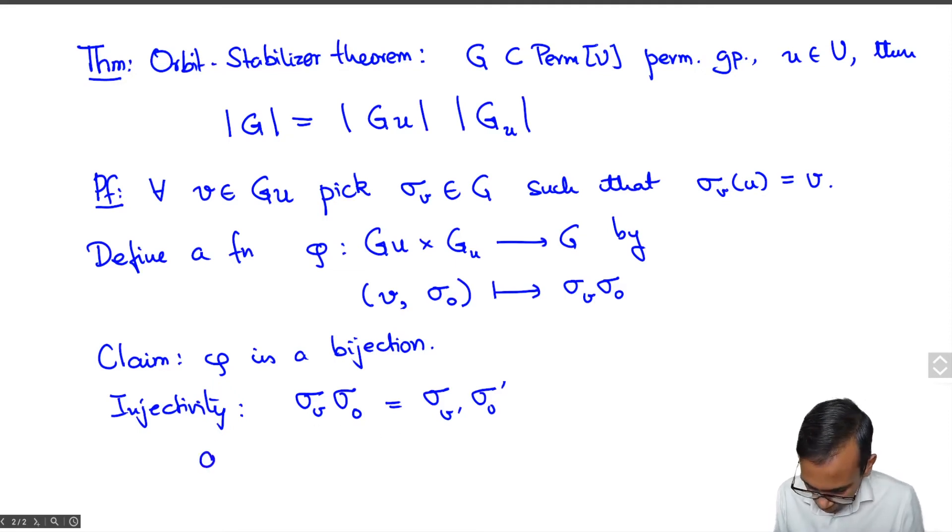So applying to U, what do we get? We get sigma V sigma 0 U is equal to sigma V prime sigma 0 prime U. But we know that sigma 0 U is equal to U because sigma 0 is in G subscript U, it is in the stabilizer.